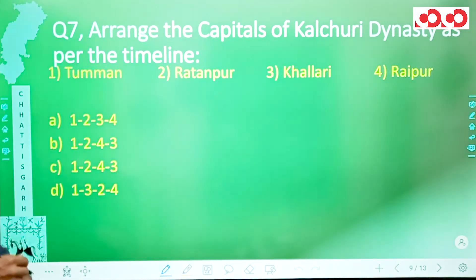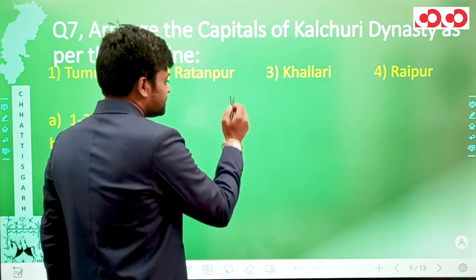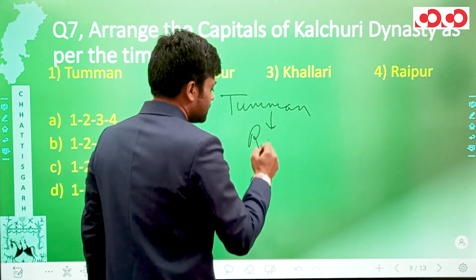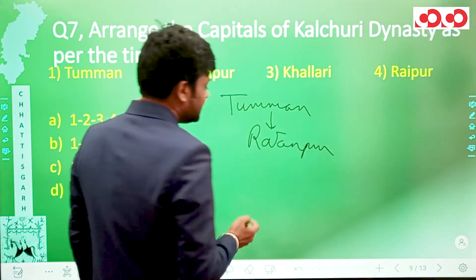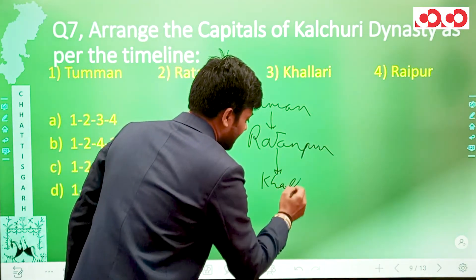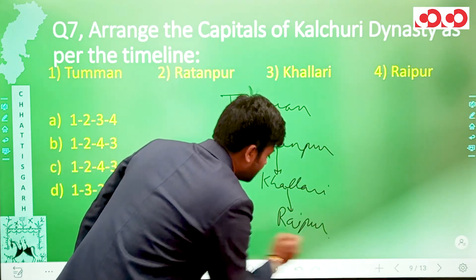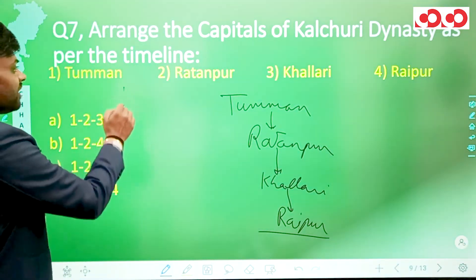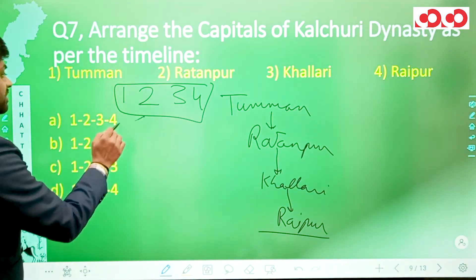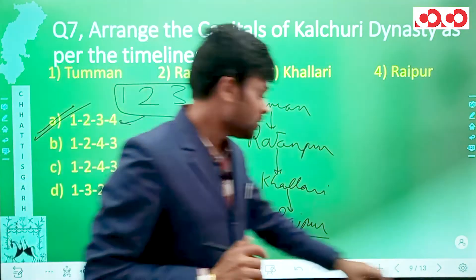Question 7 asks to arrange the capitals of the Kulchuri dynasty as per their timeline. From earlier explanations, Tumman was the first capital, next was Ratanpur, then a branch settled at Kallari and made it the capital, and finally Raipur was made capital by Brahmadev Rai. The sequence is 1, 2, 3, 4 — option A is the correct answer for question 7.